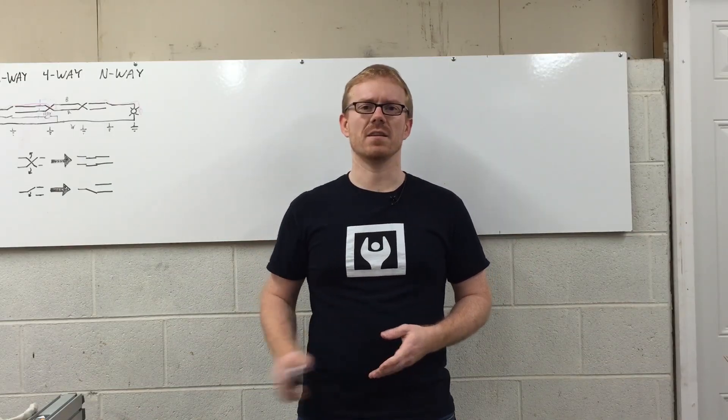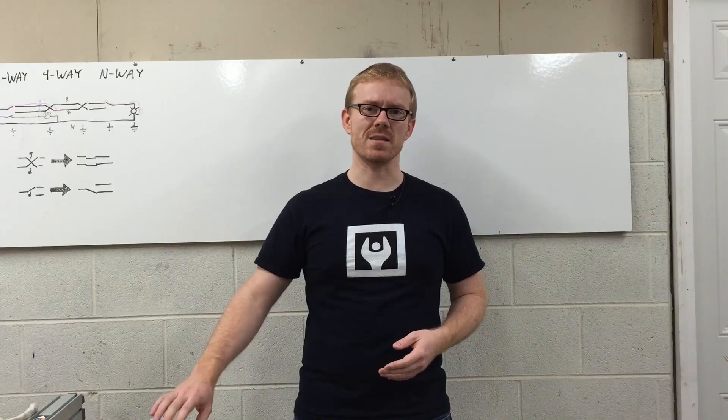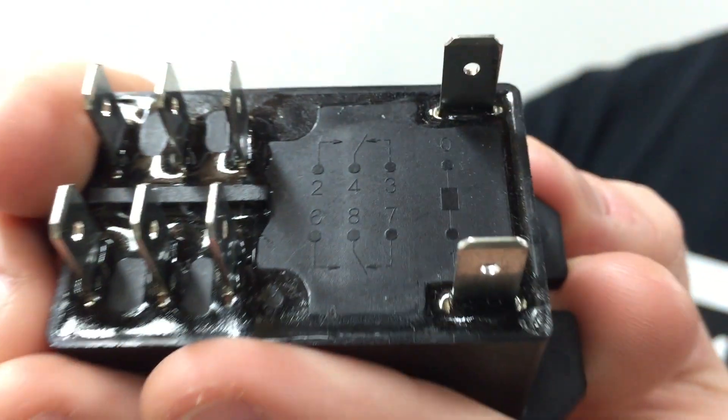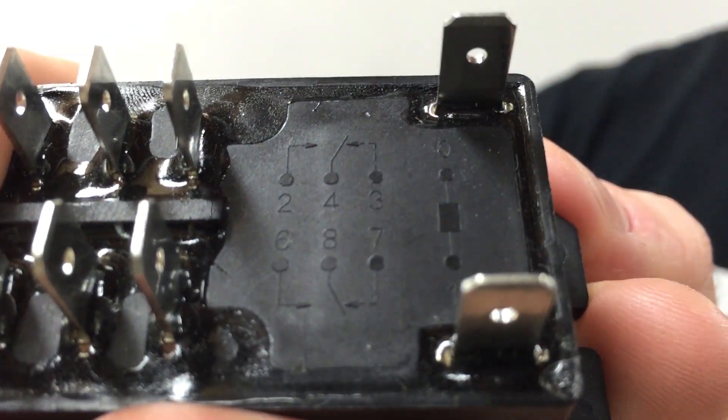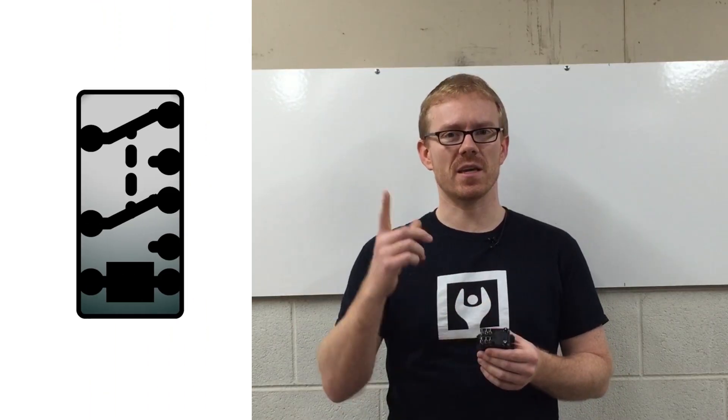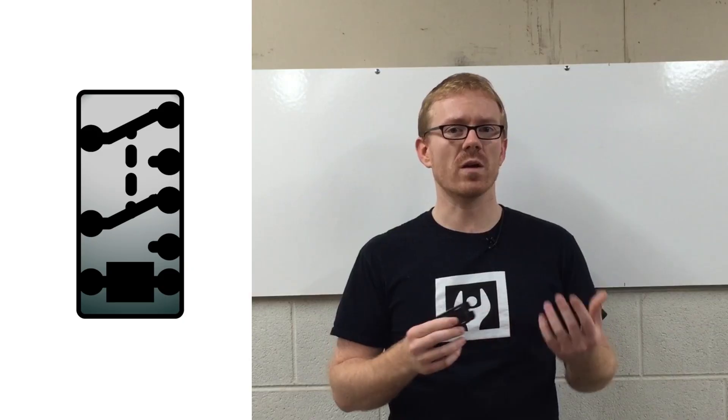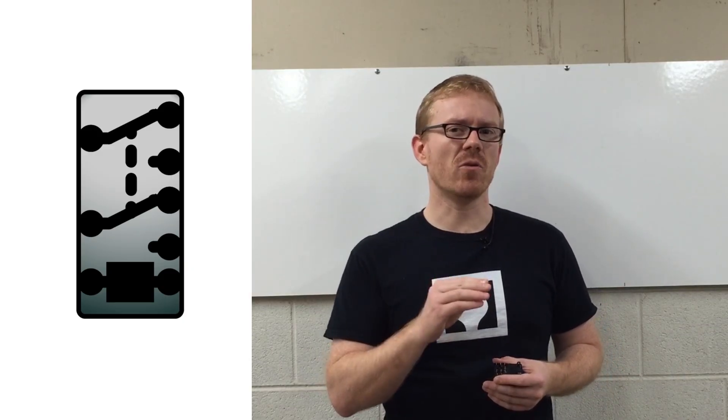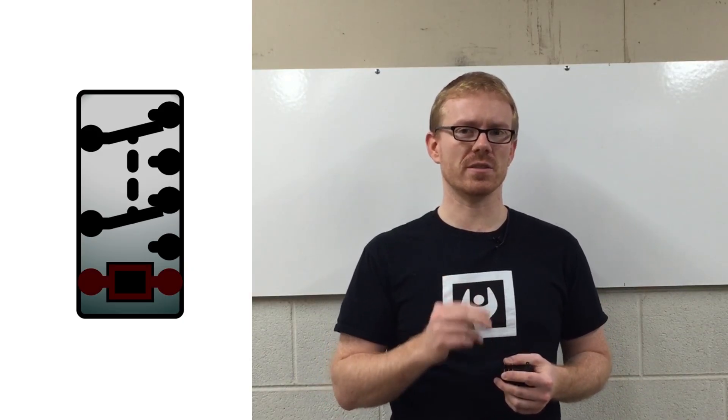Using a relay is the most straightforward way to make these applications possible. There are two sets of switches, or poles, in the relay. Each pole has a common terminal that can be connected to one of the pole's other two contacts. Both poles toggle when the relay coil is energized.